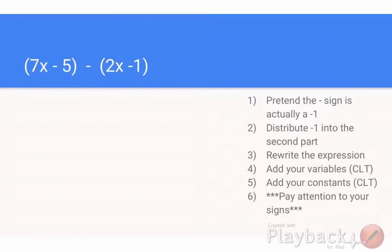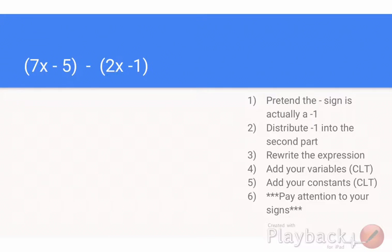According to the first step, pretend like that minus sign is actually a negative 1. The sign I'm talking about is this one right here — I'm going to pretend like there is a negative 1 there. Then I'm going to follow the second step: distribute the negative 1 into the second part.